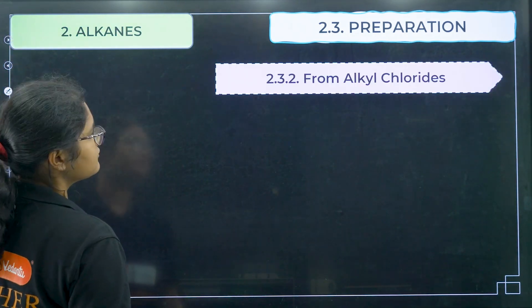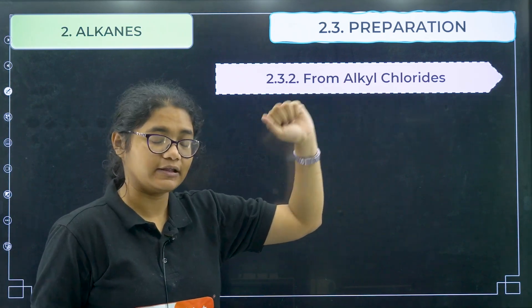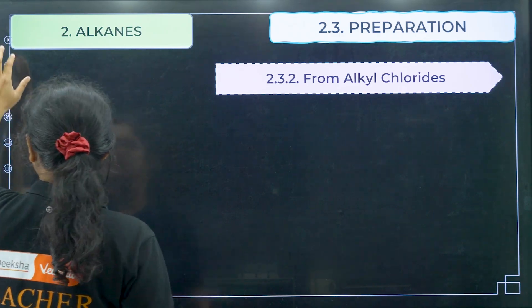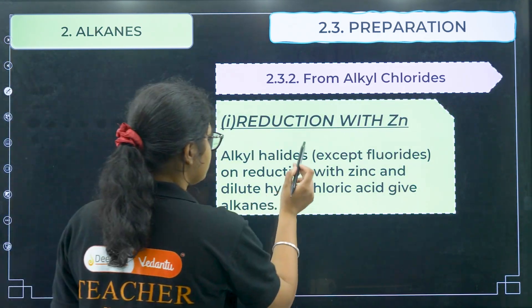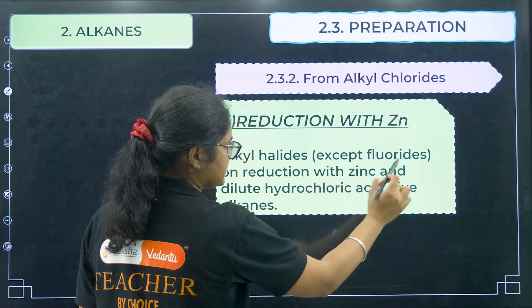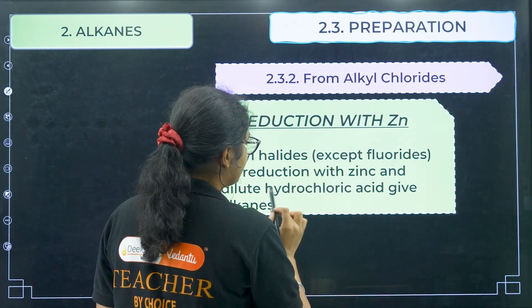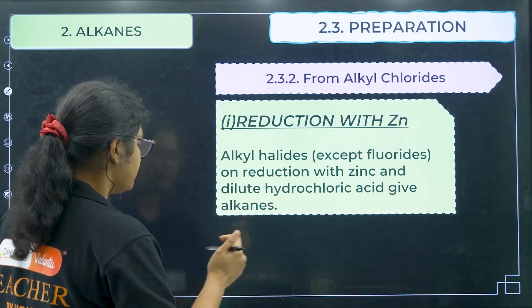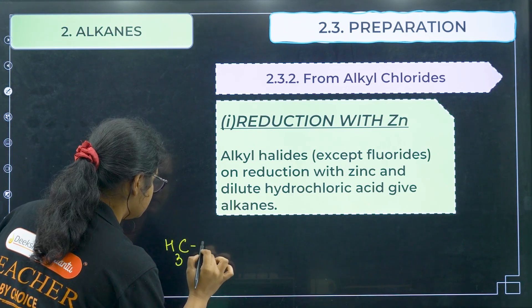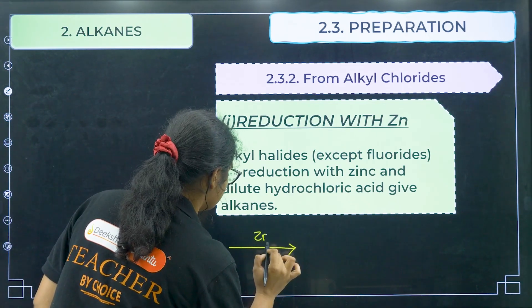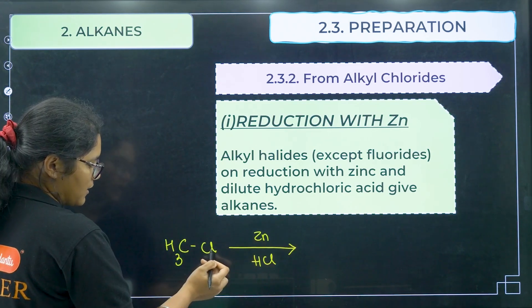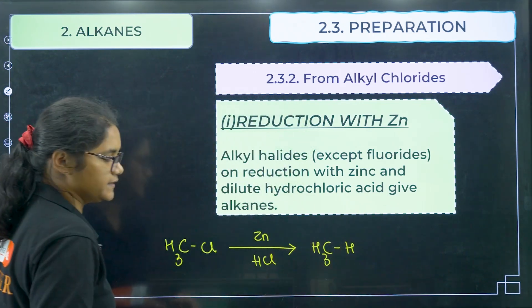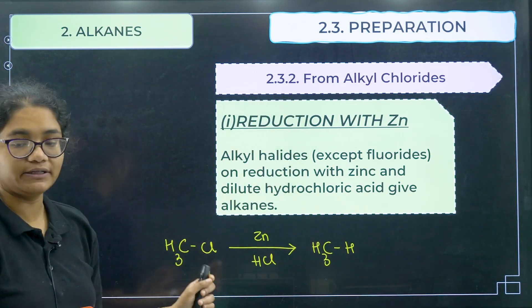The second method is from alkyl halides, and we have 2 sub-methods. The first is reduction with zinc: any alkyl halide — except fluorides, remember, except fluorides — on reduction with zinc and dilute HCl gives alkanes. For example, CH₃Cl treated with Zn and HCl gives CH₄ along with a zinc salt. This is your reduction with zinc method.